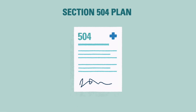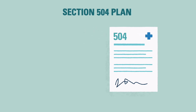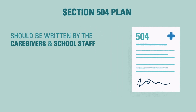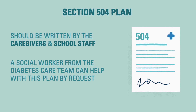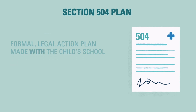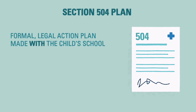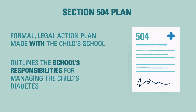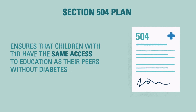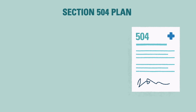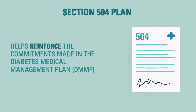The second plan is called a Section 504 Plan, commonly called a 504 Plan for short. This plan should be worked on between the student's caregivers and the school staff. The child's diabetes social worker may be available to call into the 504 Plan meeting if requested in advance. A 504 Plan is a formal, legal action plan made with the child's school that outlines the school's responsibilities in managing your child's diabetes. It ensures the child has the same access to education as their peers without diabetes and is treated fairly. The 504 Plan can help reinforce the commitments made in the DMMP.